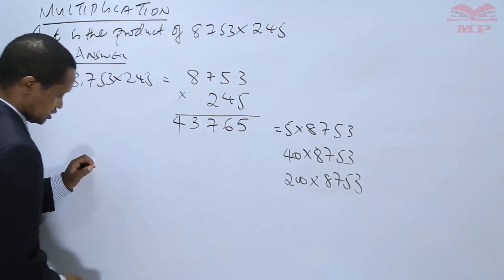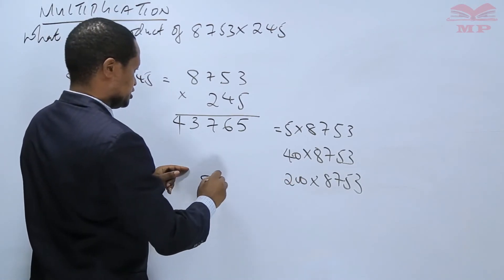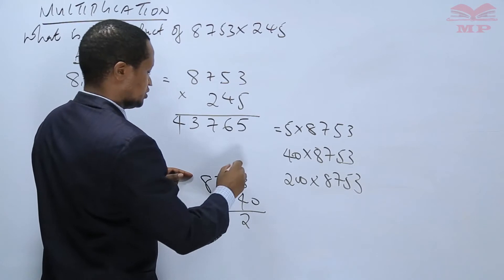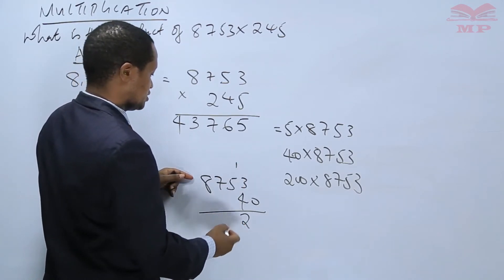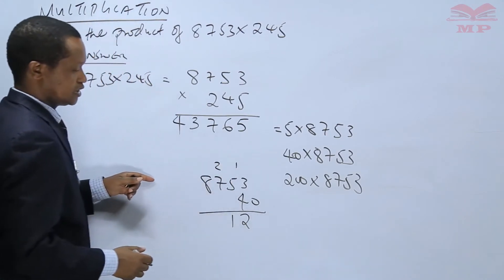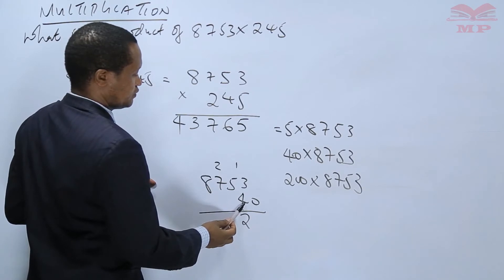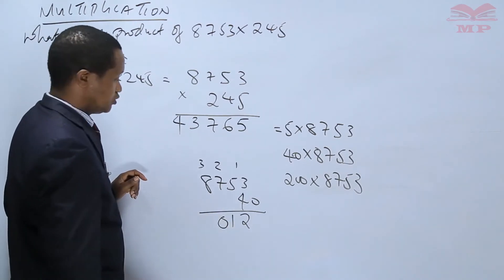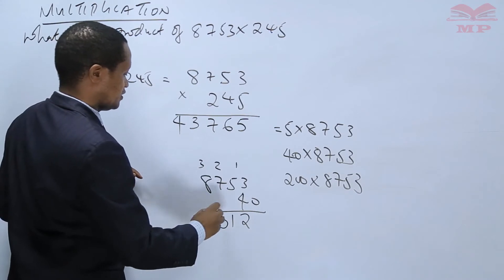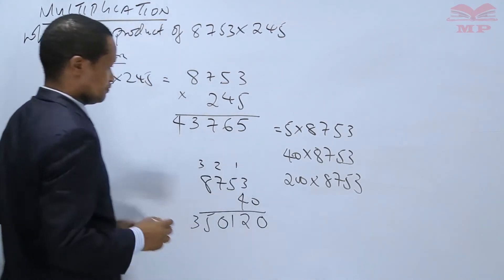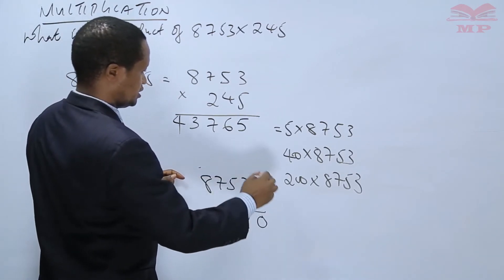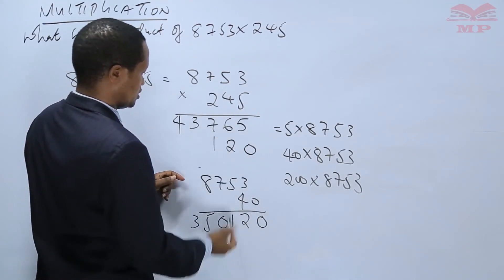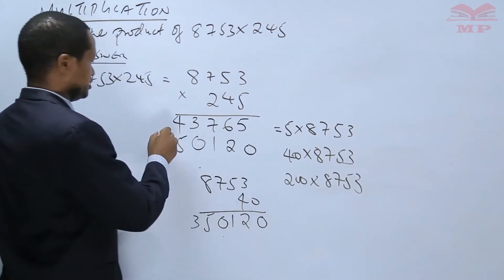Now multiply 8,753 times 40: 3 times 4 is 12, write 2, carry 1. 5 times 4 is 20 plus 1, which is 21, write 1, carry 2. 7 times 4 is 28 plus 2, which is 30, write 0, carry 3. 8 times 4 is 32 plus 3, which is 35. With the 0 placeholder, we write: 0, 2, 1, 0, 5, then 3.